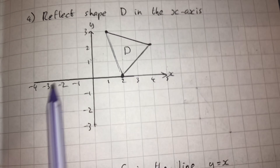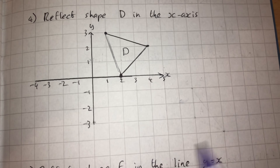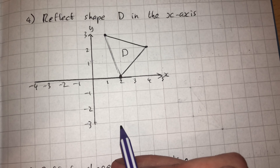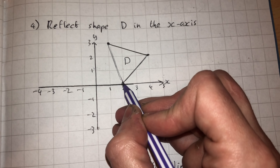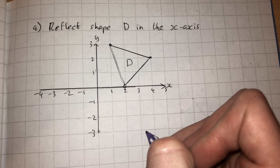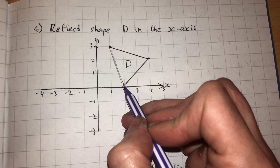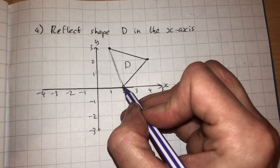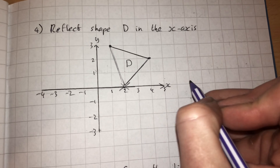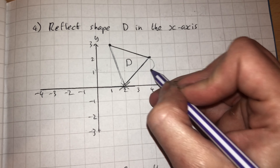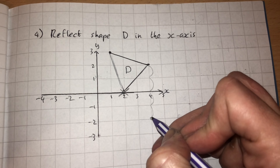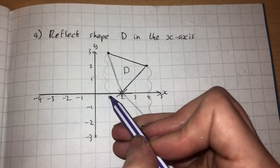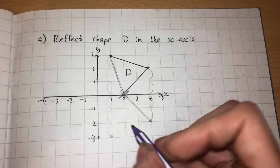Next, reflect shape D in the x-axis. This time the mirror line is already given — it's the x-axis itself. A corner of shape D that lies on the x-axis is zero squares away, so its reflected point is in the same place. The next point is two squares away, so I go two squares the opposite way. Another point is three squares away in both cases — one two three, and one two three the other side. Joining them up gives us an inverted triangle, where the reflected shape touches the original.